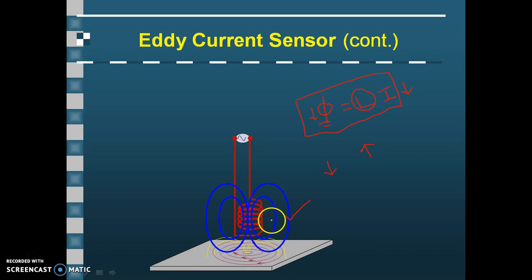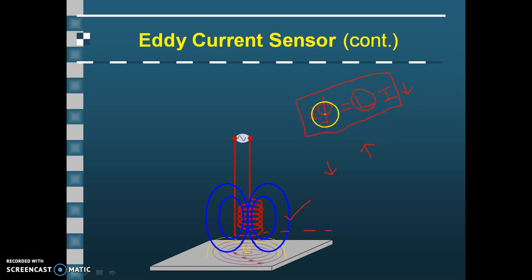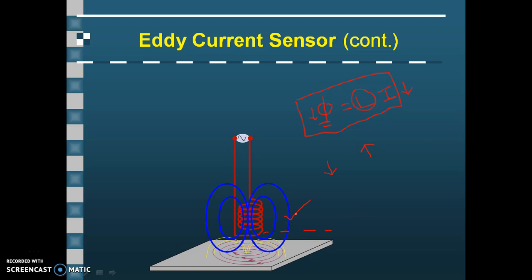So it is clear that due to eddy current, the impedance offered by the coil increases. The increase in impedance can be detected by the signal processing circuit, which produces a corresponding output signal dependent on the distance. If the distance is less, the current will decrease more because phi will decrease more due to the superimposition of the two opposing fields, so impedance will increase more. The change in impedance is detected by the signal processing circuit, which converts this into an electrical signal.